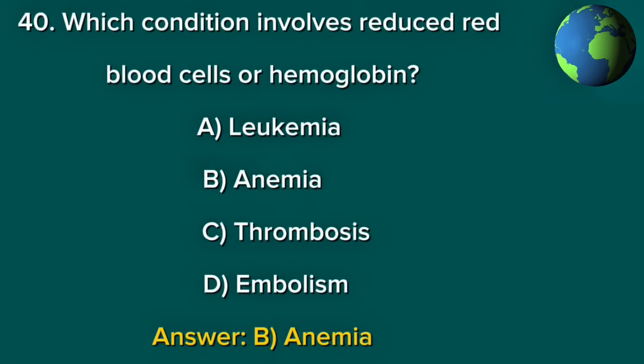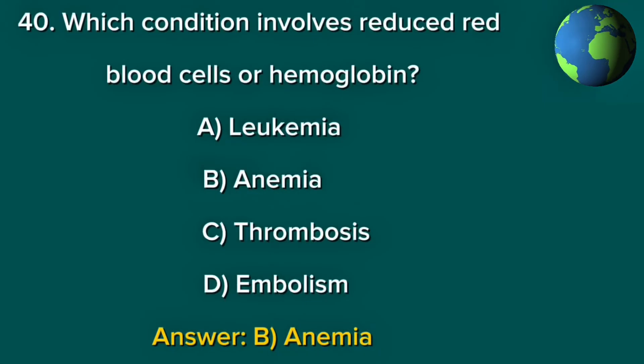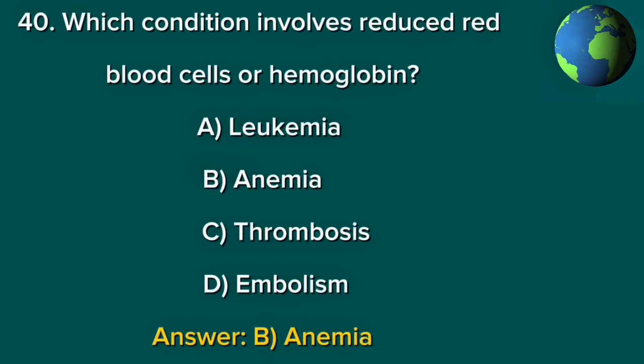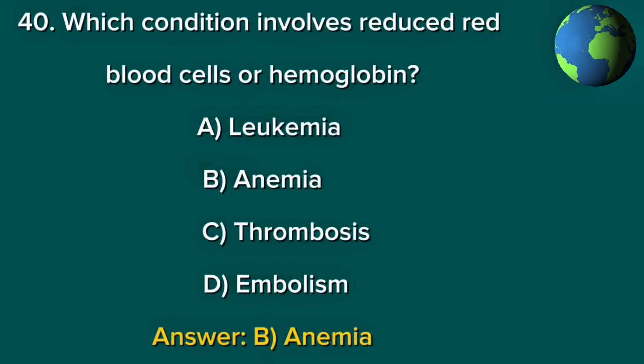Question 40. Which condition involves reduced red blood cells or hemoglobin? A. Leukemia. B. Anemia. C. Thrombosis. D. Embolism. Answer: B. Anemia.